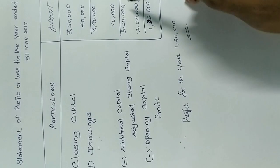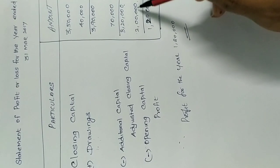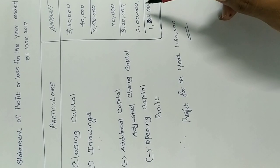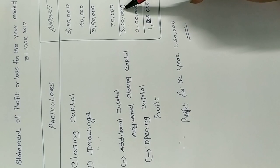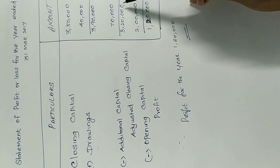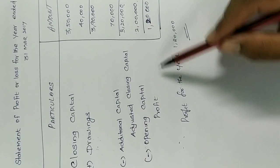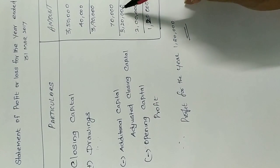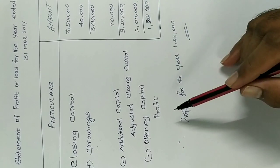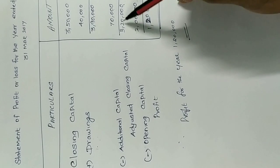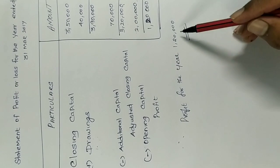Adjusted closing capital is 3,20,000. Minus opening capital 2,00,000 equals 1,20,000. Since the adjusted closing capital is the greater value compared to the opening capital, this is automatically a profit. Therefore, the profit for the year is one lakh twenty thousand.